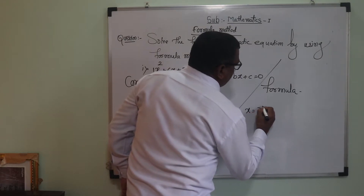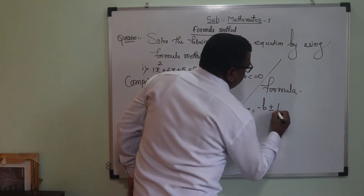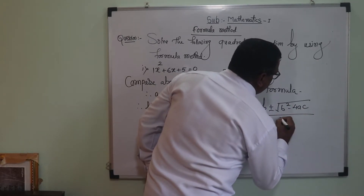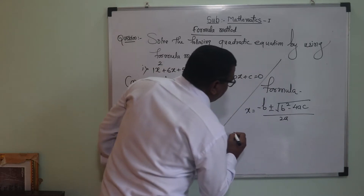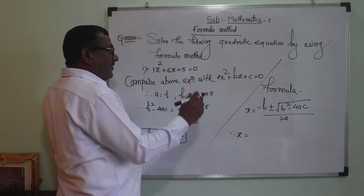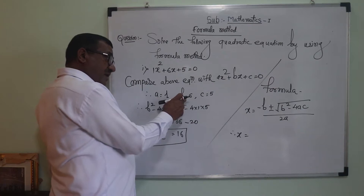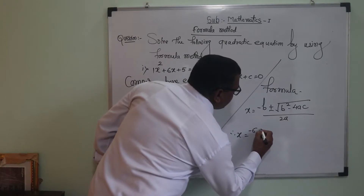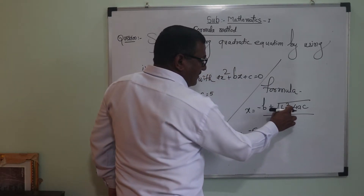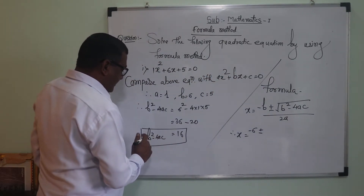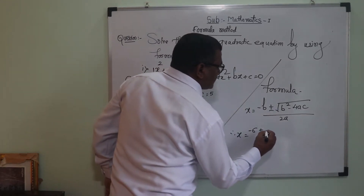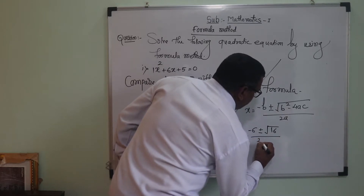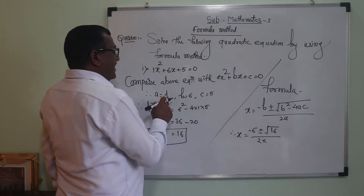The formula method uses: x is equal to minus b plus or minus under root of b squared minus 4ac, upon 2a. Substituting values: x is equal to minus 6 plus or minus under root of 16, upon 2 into 1.